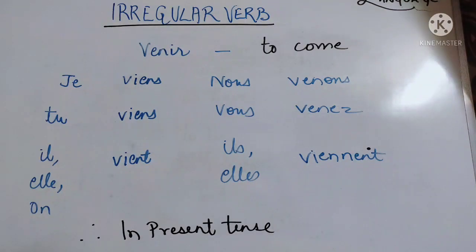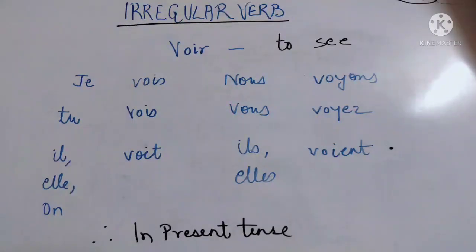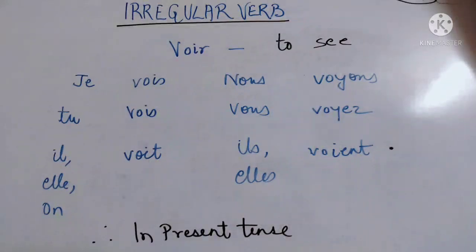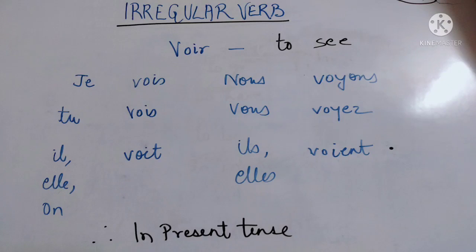'Voir' means 'to see'. The stem is V-O-I. 'Je vois' means 'I see', 'tu vois' — you see, 'il voit' — he/she sees. 'Nous voyons', 'vous voyez', 'ils voient' — we see, you see, they see. Spellings: 'je' and 'tu' — V-O-I-S. 'Il' — V-O-I-T. 'Nous' — V-O-Y-O-N-S. 'Vous' — V-O-Y-E-Z. 'Ils' — V-O-I-E-N-T.